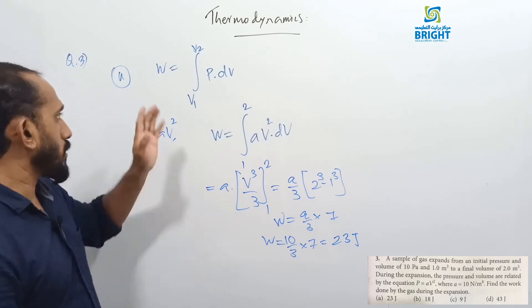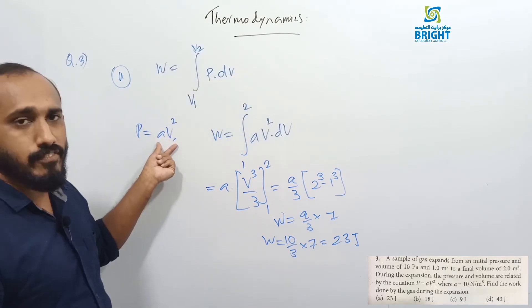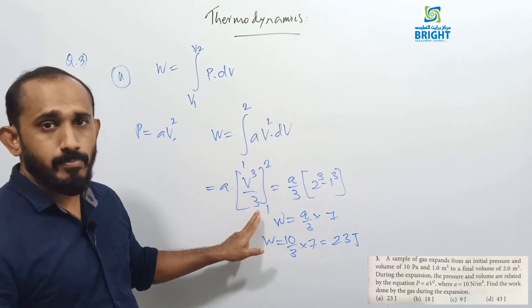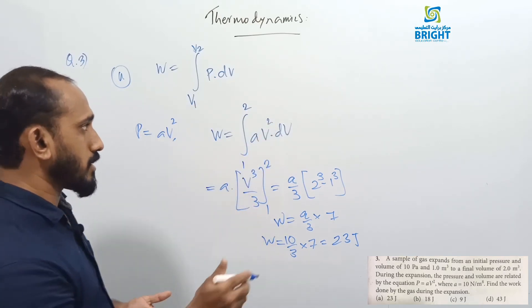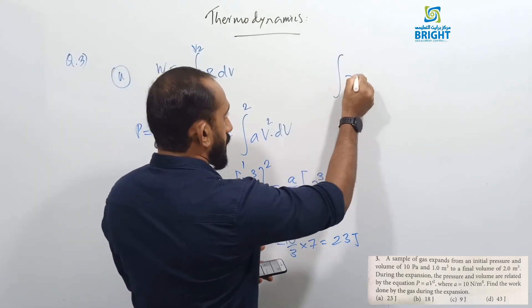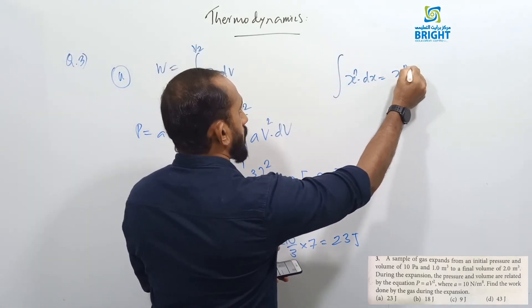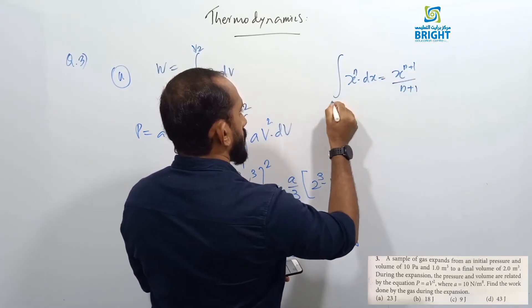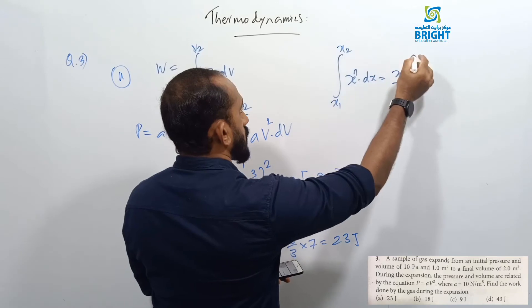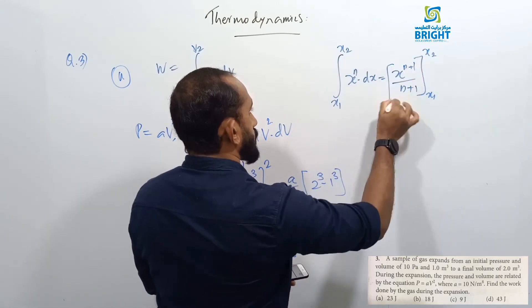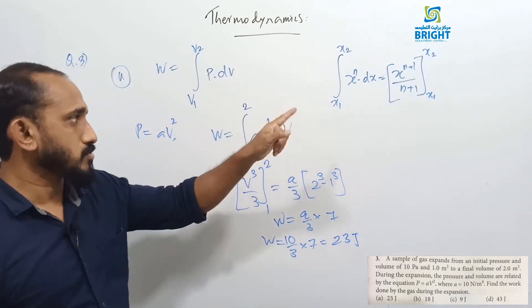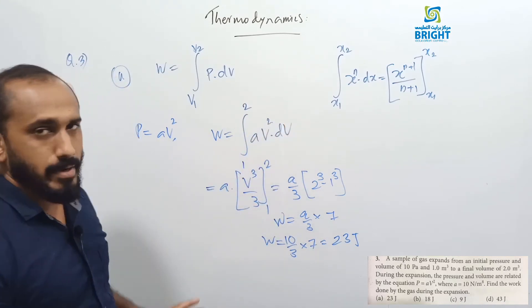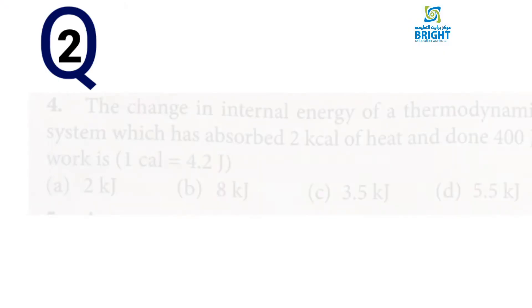The general integration rule used here is: integral of x^n dx = x^(n+1)/(n+1). Applying that to V² gives V³/3, evaluated from V1 = 1 to V2 = 2.